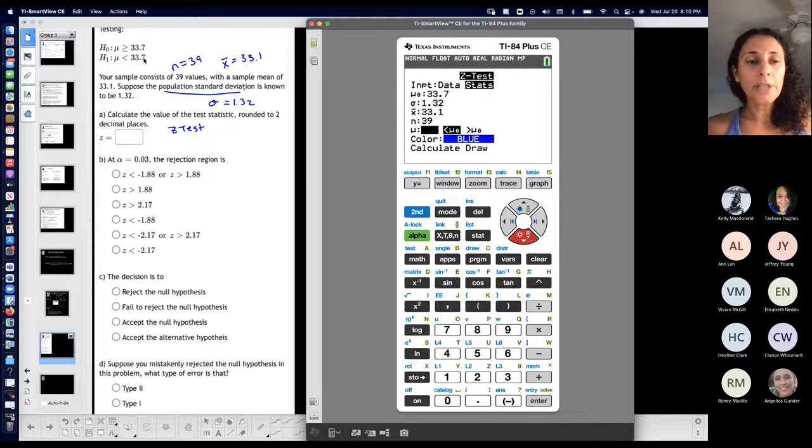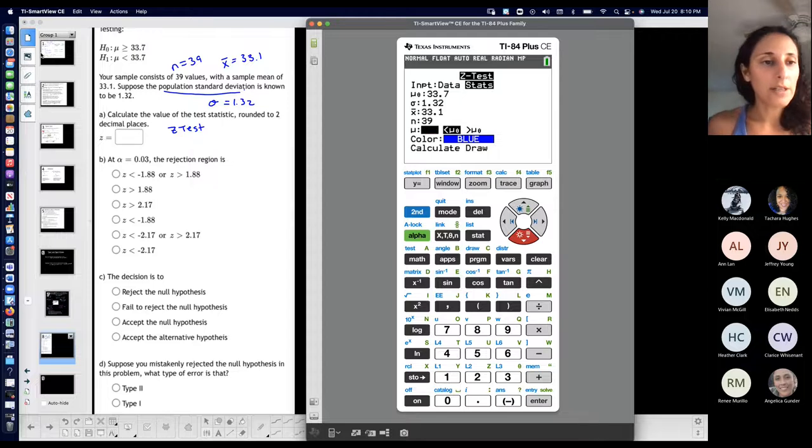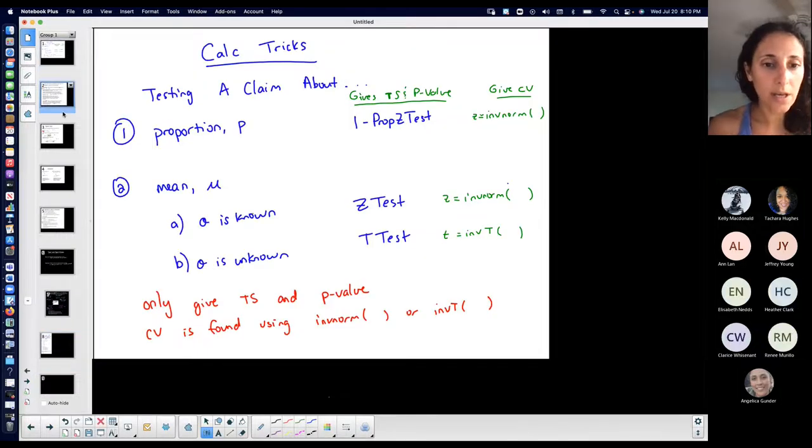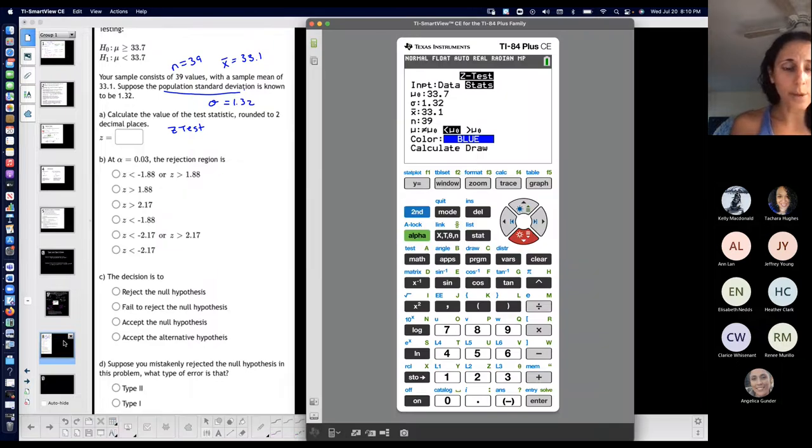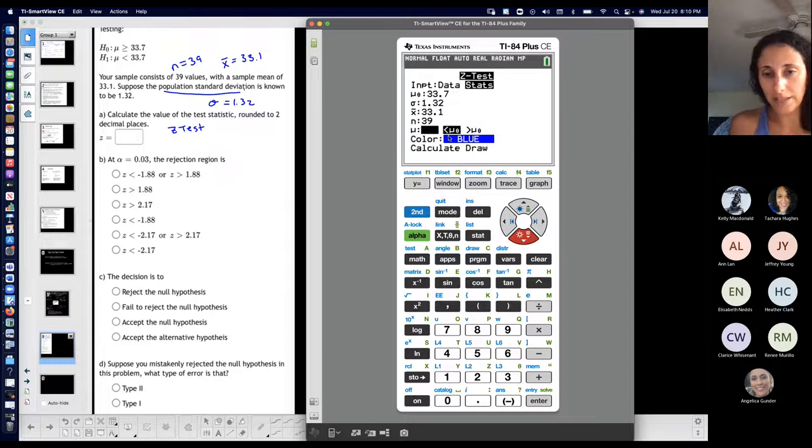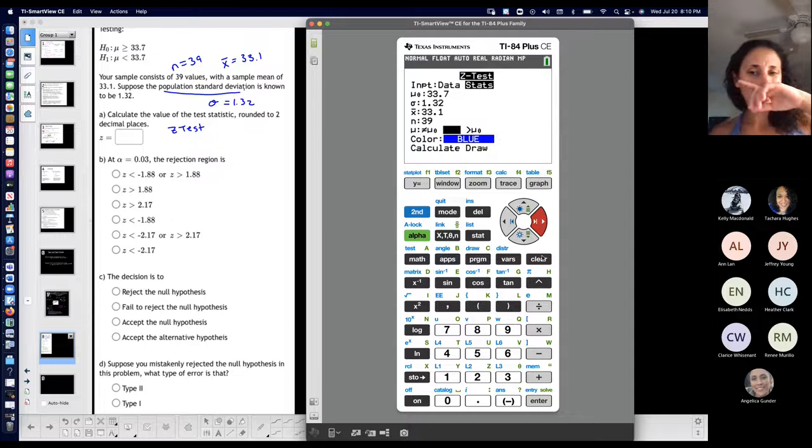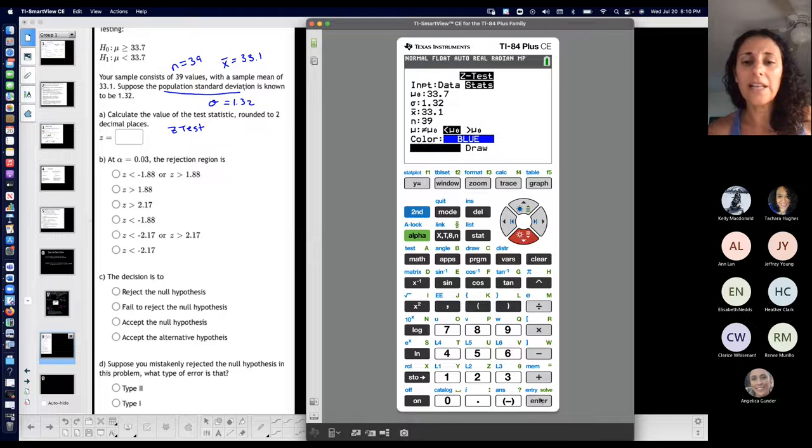What kind of test is it? Well, if you remember what I talked about yesterday, the kinds of tests that we have, we have a left-tailed test, a right-tailed test, and a two-tailed test. If the alternative hypothesis has a less-than symbol pointing to the left, we have a left-tailed test. So the rejection region is in the left tail. The critical value is to the left. All that kind of stuff is in the left. So I have a left-tailed test, which means I want to highlight less than. I want to highlight the less than mu not. Mine's already highlighted. If it weren't, you just scroll over to it and press enter. You don't need to change color or draw anything. Calculate.